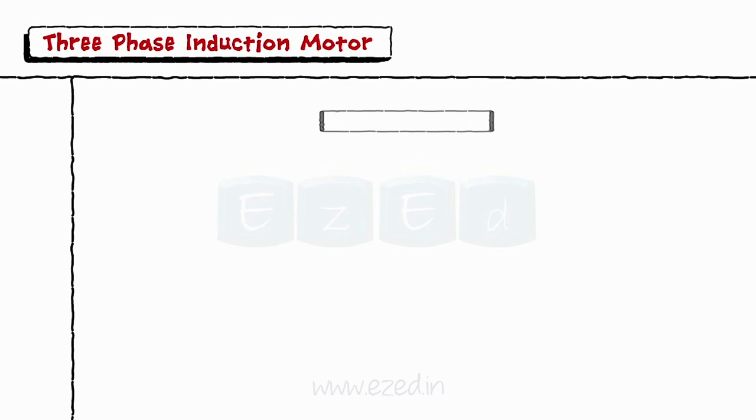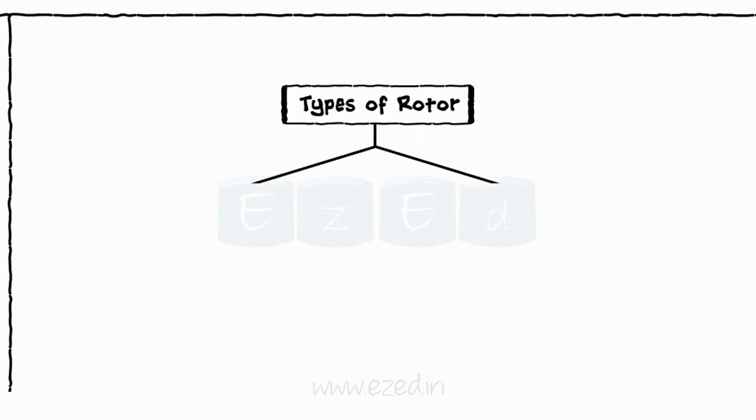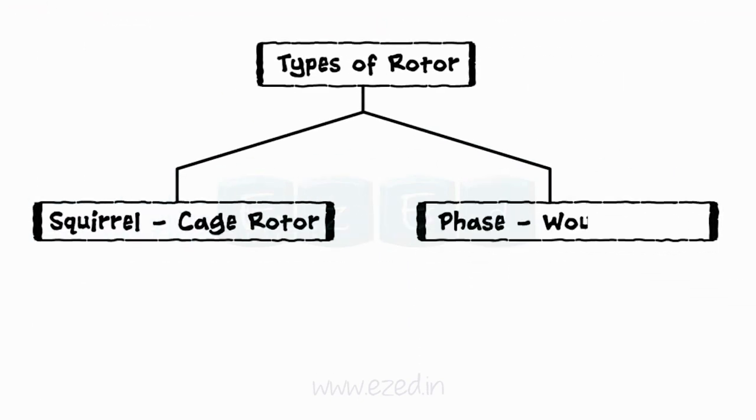Depending on the types of windings used, the rotors are categorized in two types: squirrel cage rotor and phase wound rotor.